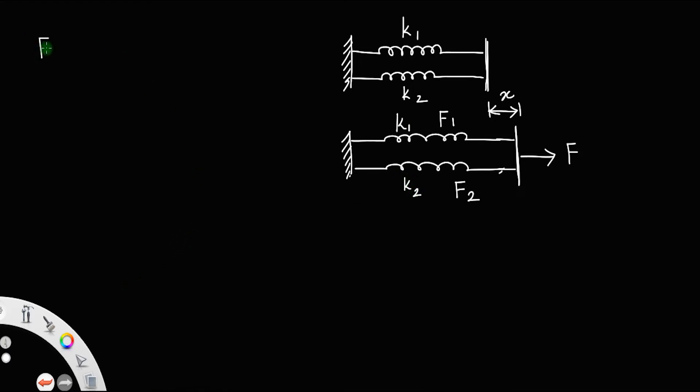Now we have total force F is equal to F1 plus F2, because the total F1 plus F2 will be the force applied. So F1 is equal to, since the extension on both the springs is the same, because this rod remains straight.